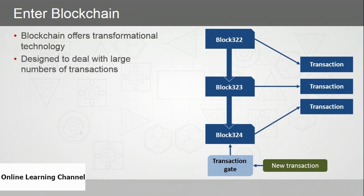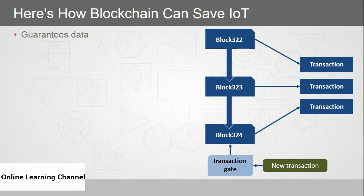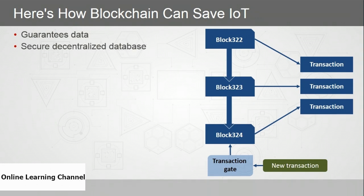Think about it: by design, blockchain is meant to deal with large numbers of transactions — it's been tried and tested in that arena. It's decentralized, meaning no one person or party can take it over. It works with massive numbers of nodes, it's scalable, and it has great security features. Blockchain guarantees data integrity — a secure, decentralized database that needs consensus in order to be written to. It guarantees non-repudiation, and new data must be validated before it's added to the ledger.